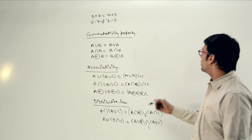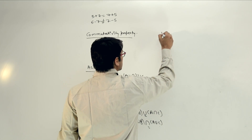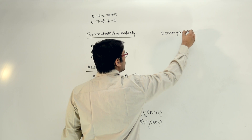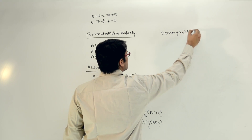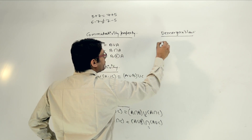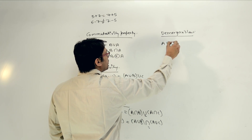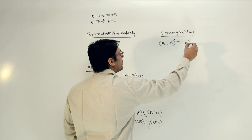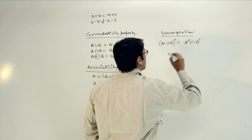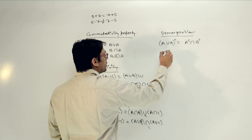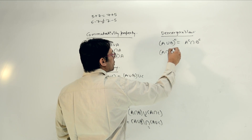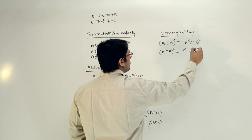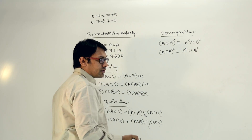The next property is called de Morgan's law. If we do (A union B) complement, then it can be written as A complement intersection B complement. If we have (A intersection B) complement, then it can be written as A complement union B complement. So that is de Morgan's law.